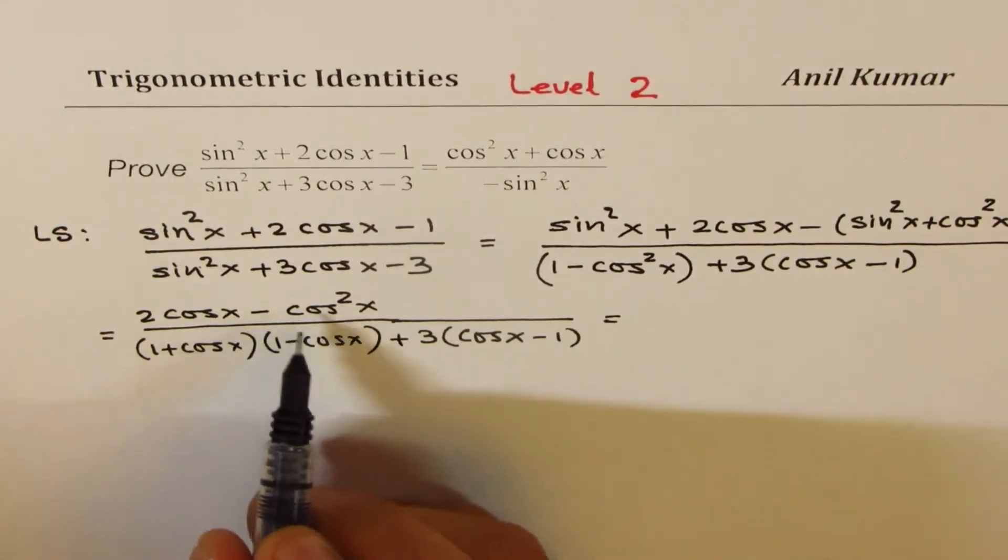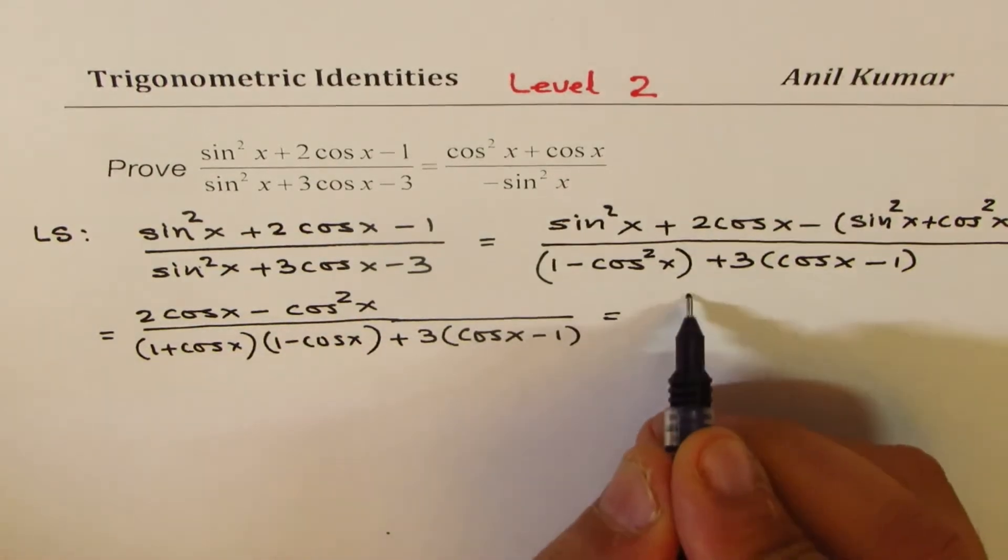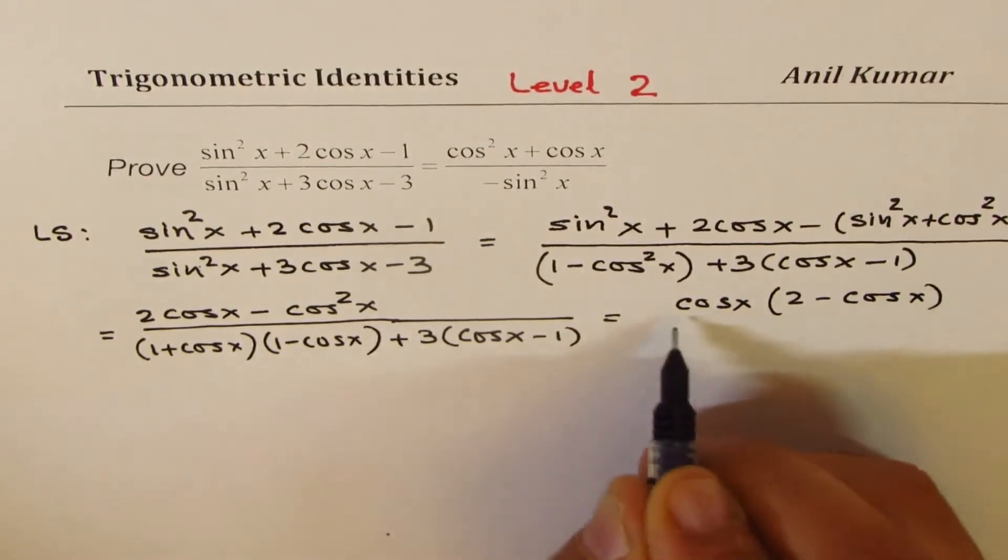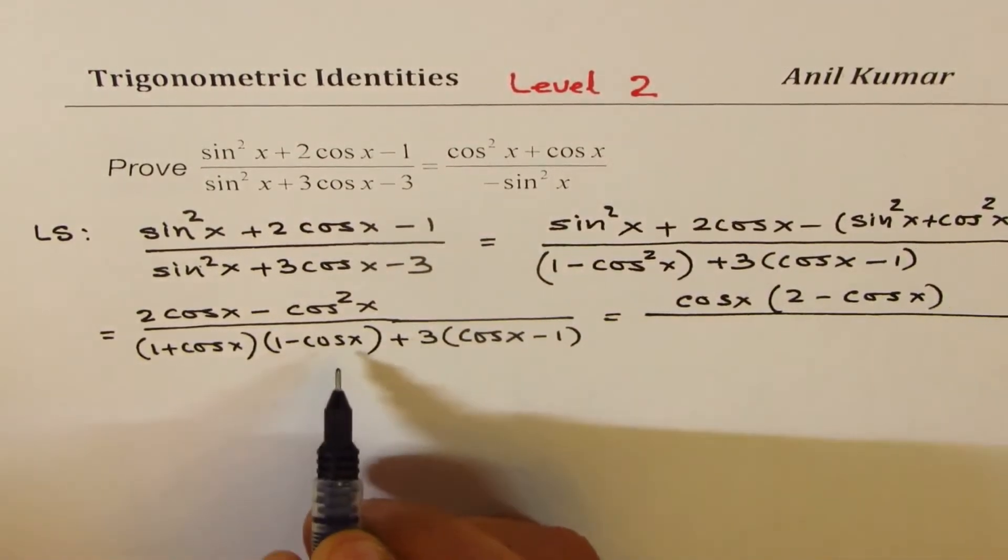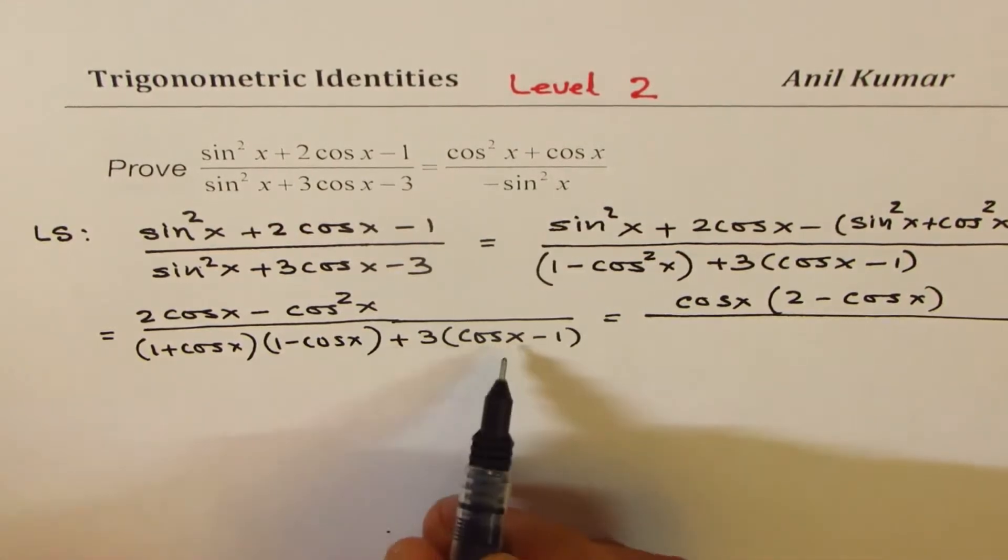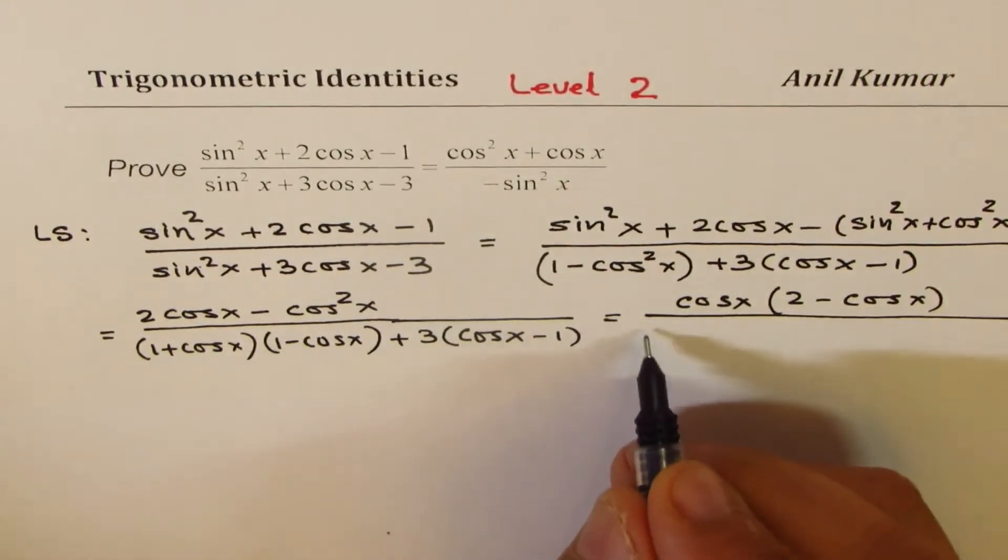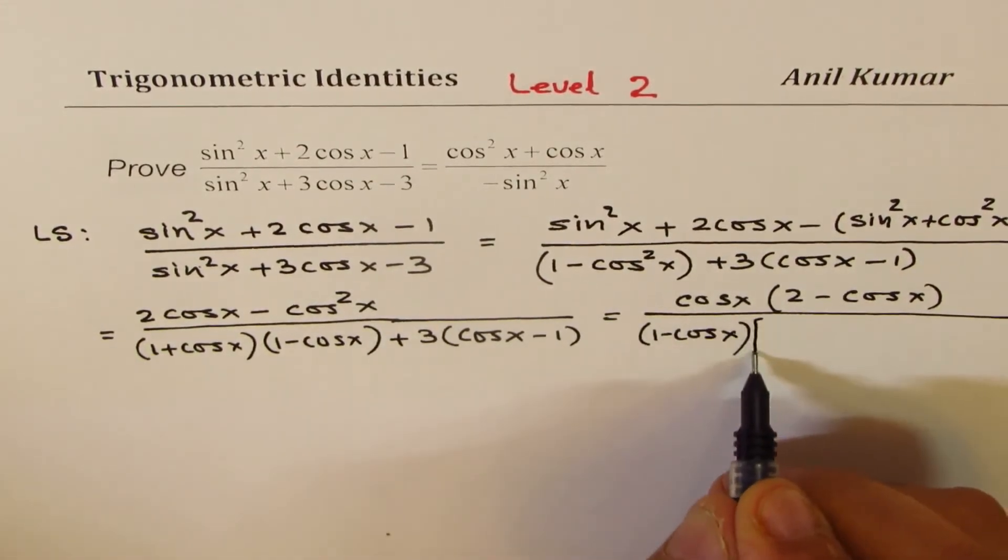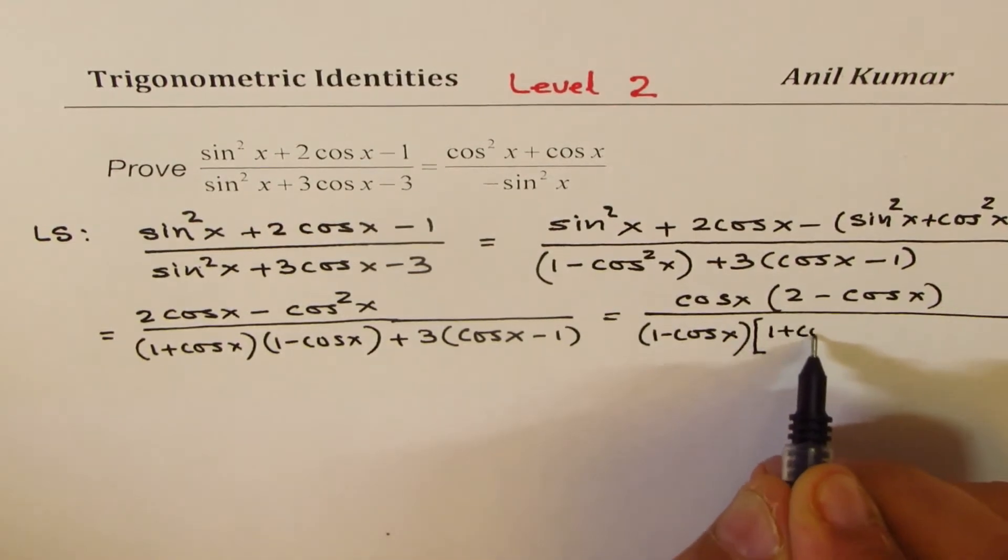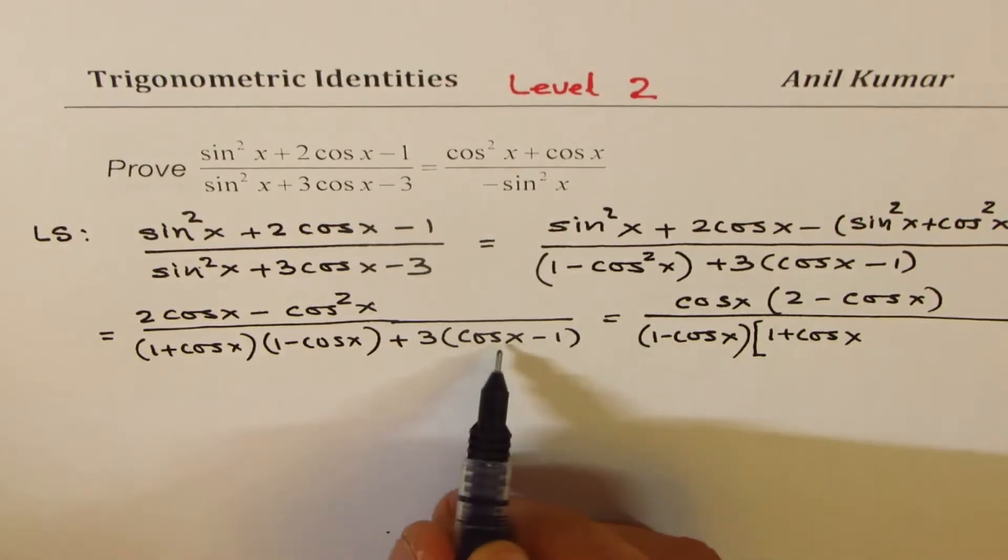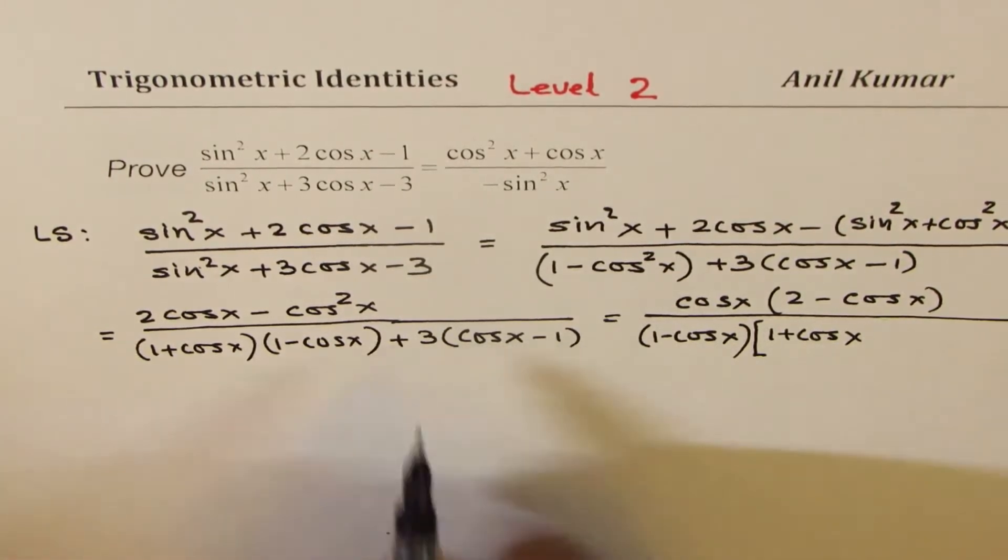Now in the numerator, I can take cos x as common. So we get cos x(2 - cos x). Here we can take 1 - cos x as common. So let's take 1 - cos x common. So we are left with 1 + cos x from first term. And since we took 1 - cos x, here we have cos x - 1, we'll get -3.